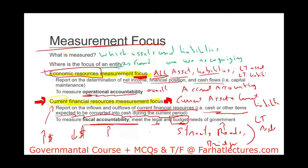If you recall from the prior session, governmental fund financial statements have no long-term assets and no long-term liabilities. Long-term items are put on a separate list and discussed later. The current financial resource focus only covers current assets and current liabilities, whereas the economic resource focus encompasses everything — both long-term and short-term.